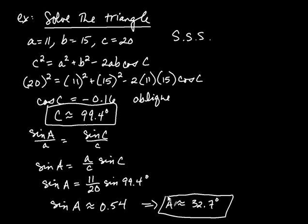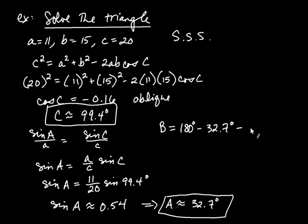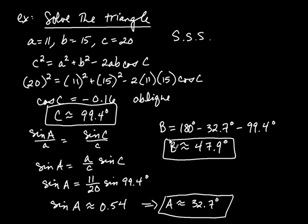We've found angle C and angle A. To find angle B, we don't need law of cosines or law of sines — all the angles must add to 180 degrees. So B equals 180 minus 32.7 minus 99.4, which gives B approximately equal to 47.9 degrees. Adding them all up confirms we get 180 degrees. We just solved a triangle involving side-side-side.